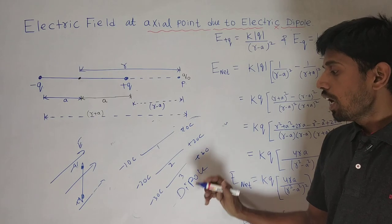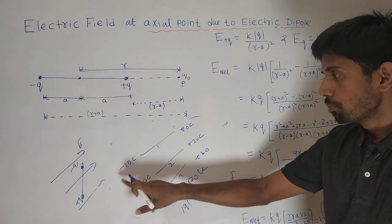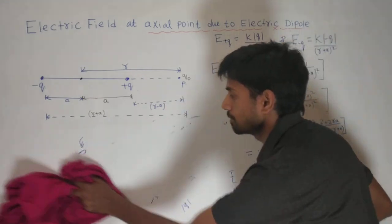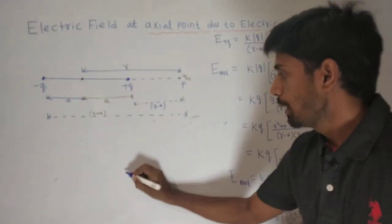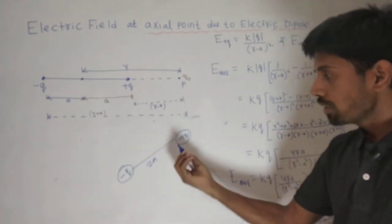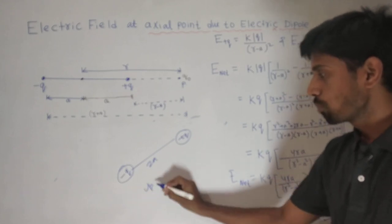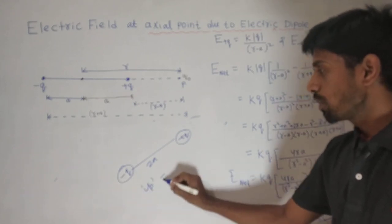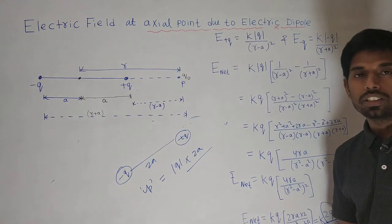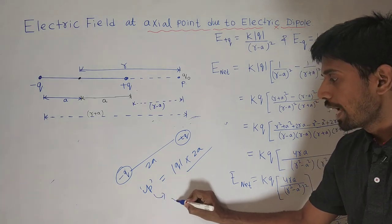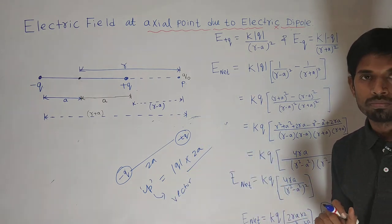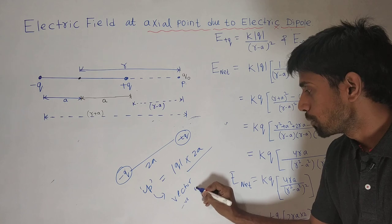That difference is told to us by dipole moment. Dipole moment is defined as the magnitude of any one charge multiplied by the distance between the two charges. Suppose there are two charges, minus Q charge and plus Q charge, separated by distance 2A. Dipole moment is represented by the symbol rho, and rho is equal to magnitude of Q times 2A. This gives the dipole moment. Dipole moment is a vector quantity; it simply gives the strength of any dipole.